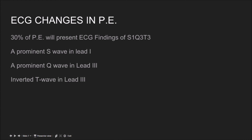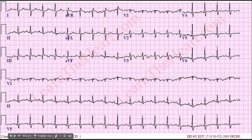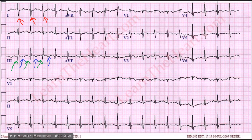Let me explain what I mean. If you look here at lead one, you see a huge S wave — look at its size in reference to the height of the QRS. Now look down at lead three: you can clearly see a huge Q wave there. And then take a look at the inverted T waves you'll see in lead three. This is a clear example of the pulmonary embolus. Whenever your patient presents with the physical findings we discussed and you see this, you've got a pretty good idea you're looking at a pulmonary embolus.